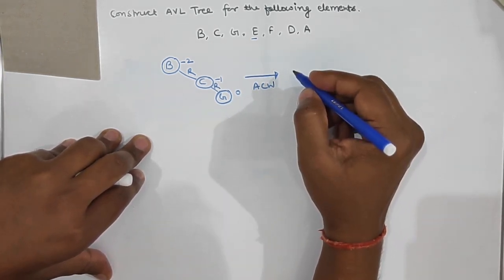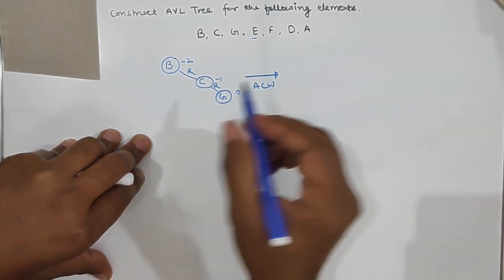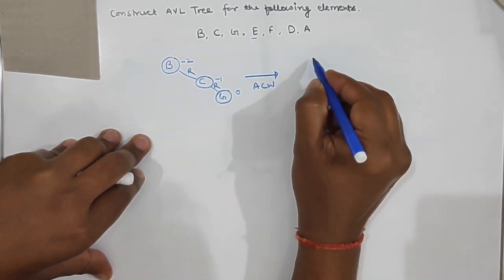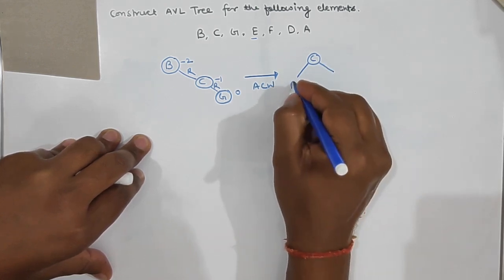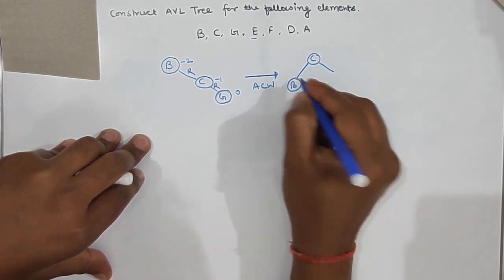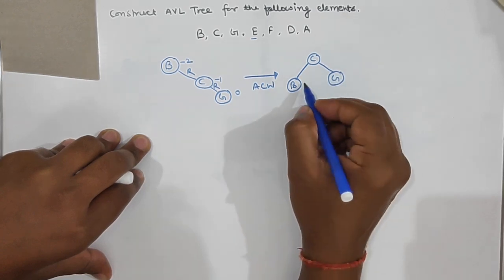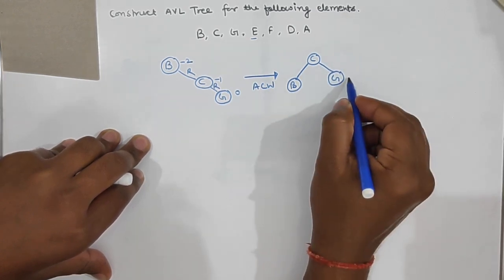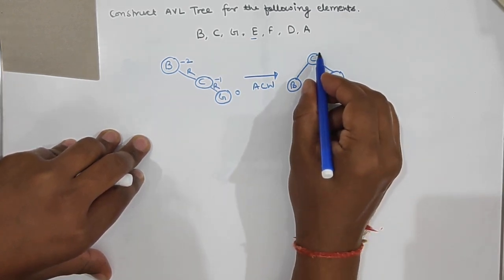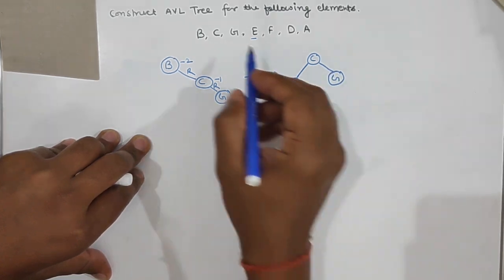For an RR problem we rotate anti-clockwise with c at center. So c will become the parent, b at the left side, and g at the right side. Now it is balanced — balance factor here is 0, here is 0, and here also is 0.